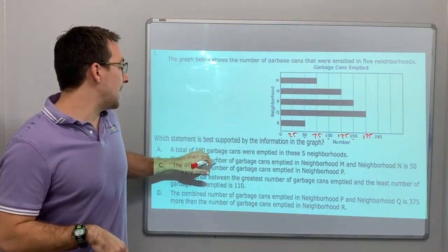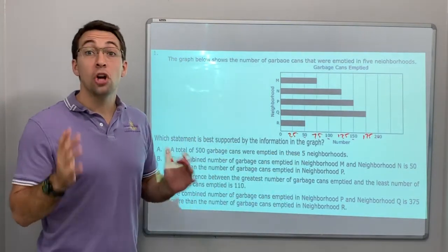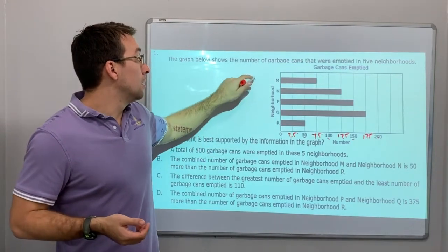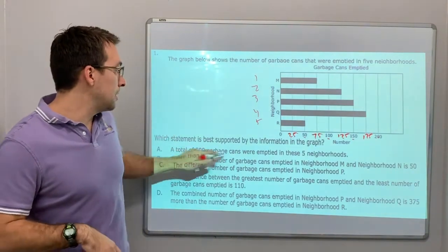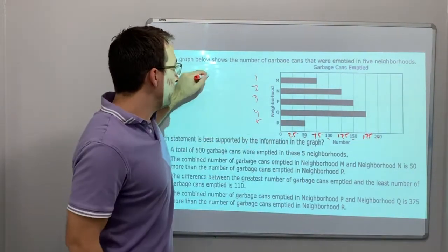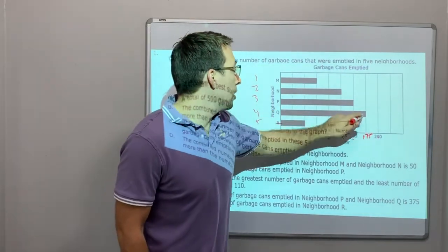A total of 500 garbage cans were emptied in these five days. Total. So it's comparing all five days. One, two, three, four, five. Well, those are the five neighborhoods. These five neighborhoods, sorry. So let's add them together. 50, so that's R, 175.